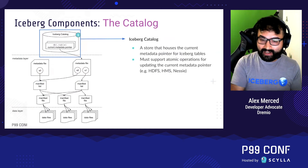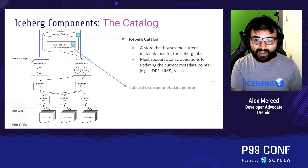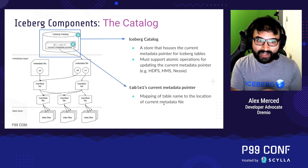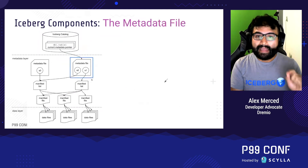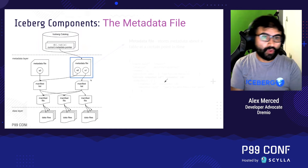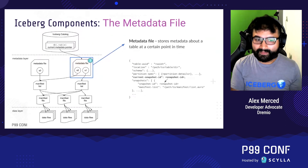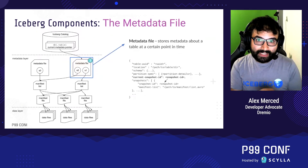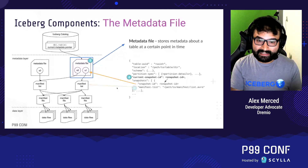So when you look at the catalog, it gives you a pointer to that table's metadata file. That metadata file basically defines the table: what is the table schema, what is the partitioning scheme, what is the current snapshot and all the previous snapshots. Because we have to figure out which snapshot we're querying, once we determine that at the metadata file level, that snapshot points to a file called a manifest list.